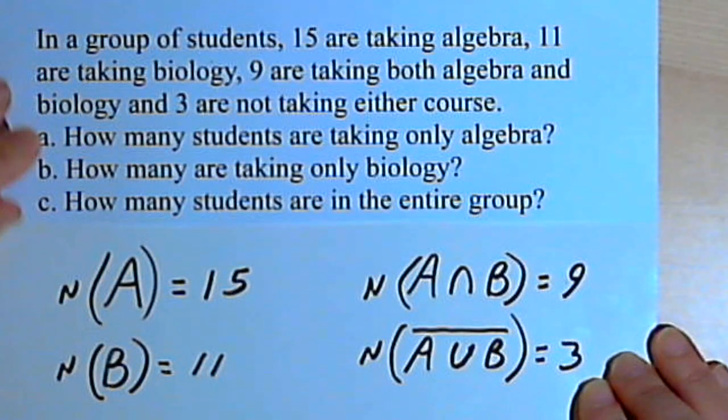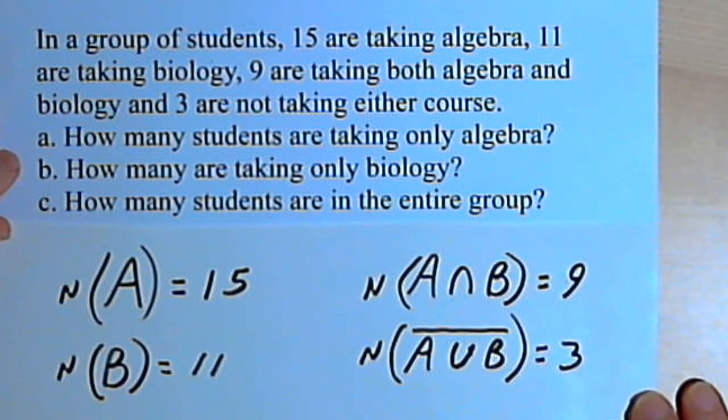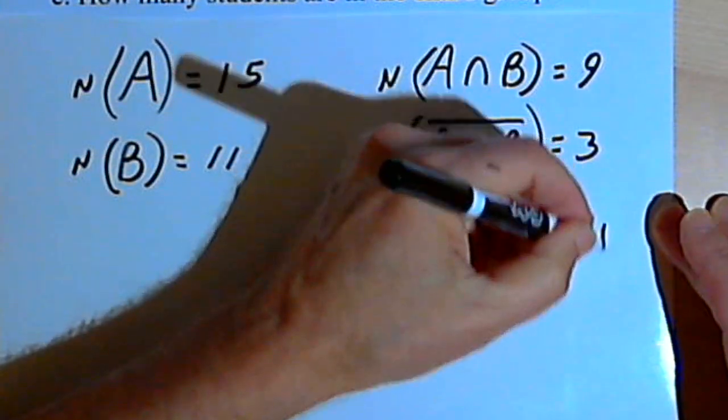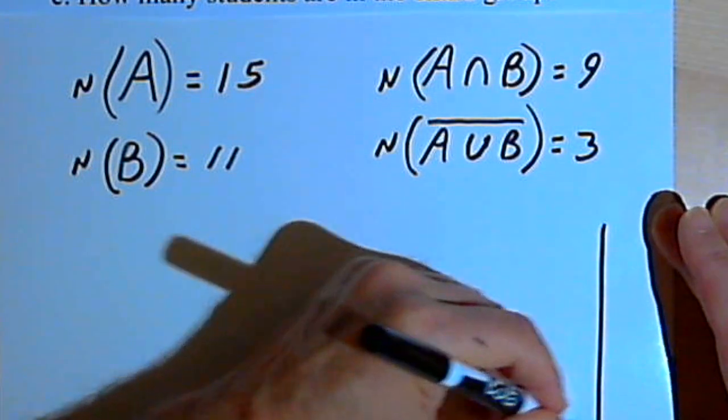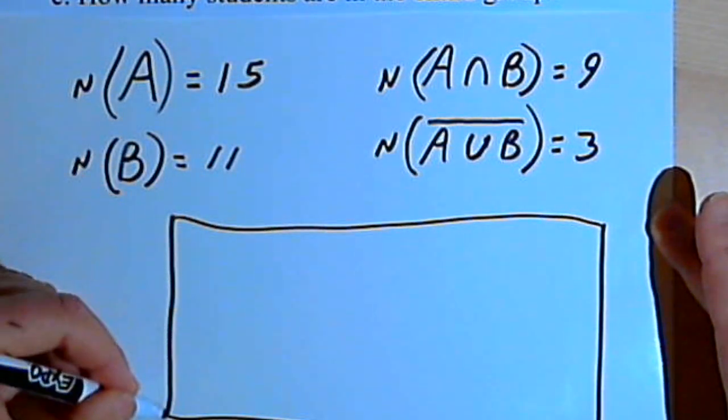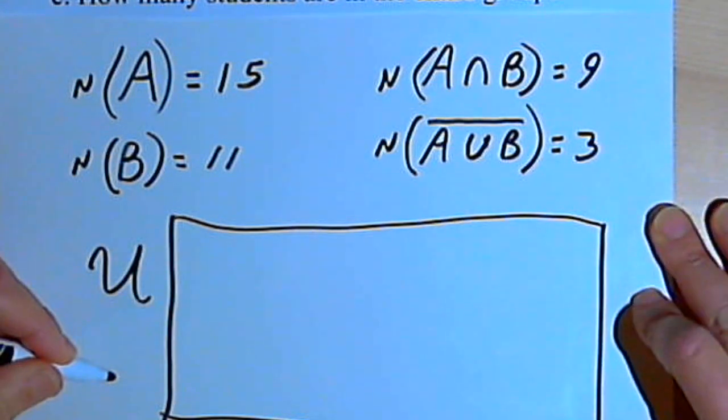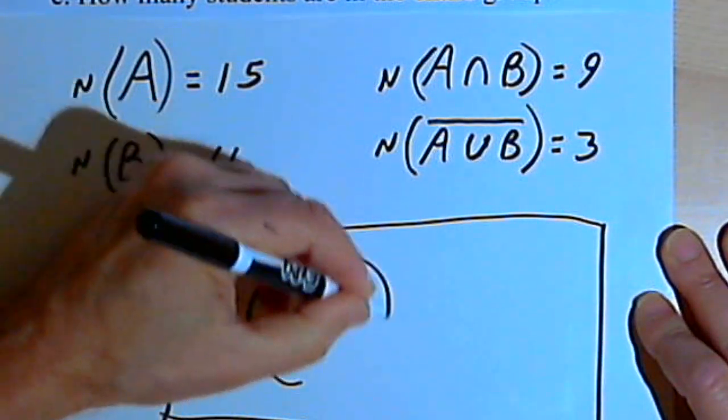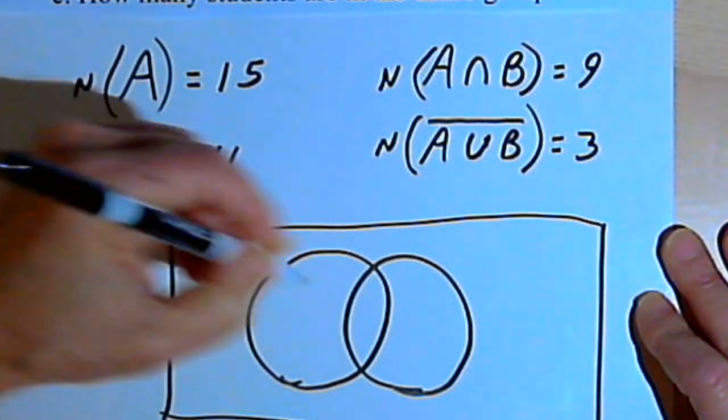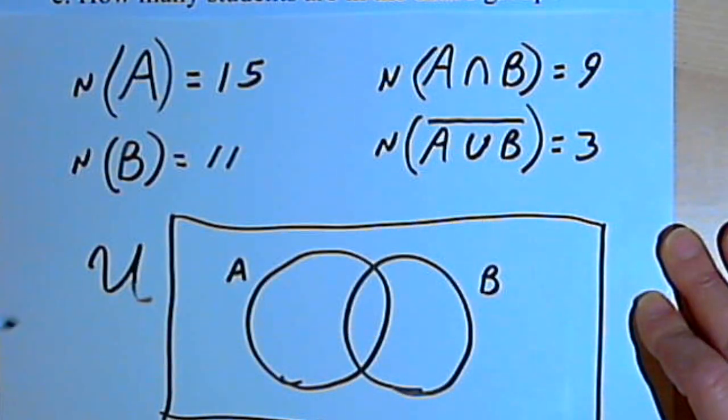So now I've got all the basic information I need, and I can draw my Venn diagram. So I'll draw a rectangle for the universal set and two circles in it, two overlapping circles, since I know that the two sets overlap. One circle for set A and one circle for set B. And now let's see what I know.